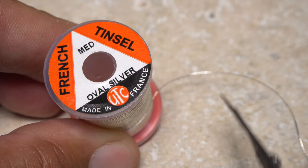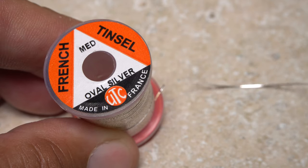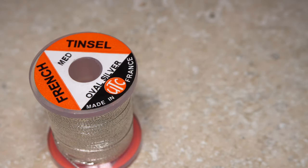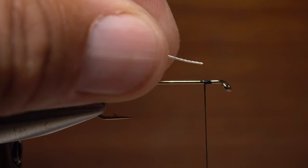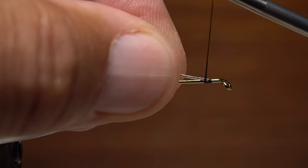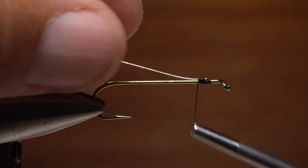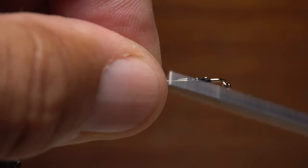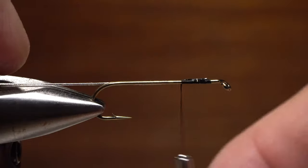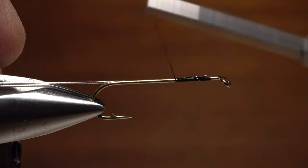Medium-sized oval silver French tinsel is used for the rib. A 10-inch length will make numerous flies. Lay one end of the tinsel on top of the hook shank and start taking thread wraps to secure it. As you wrap rearward with your tying thread, allow the tinsel to be pushed first to the far side of the hook, then to the underside.